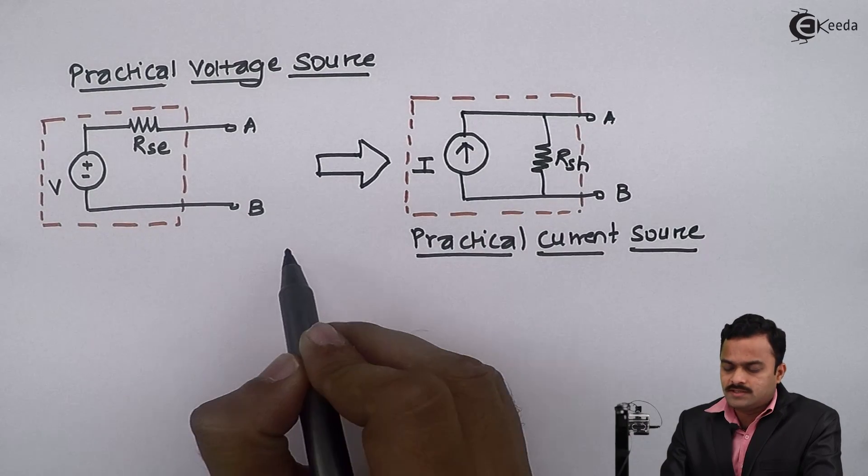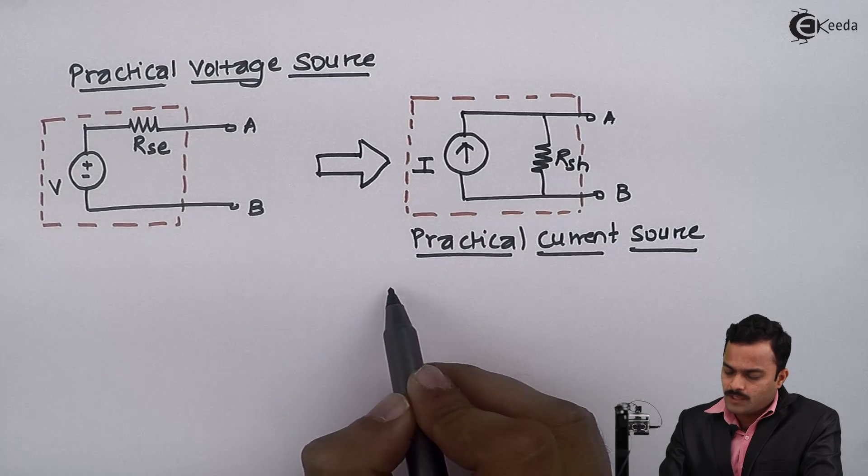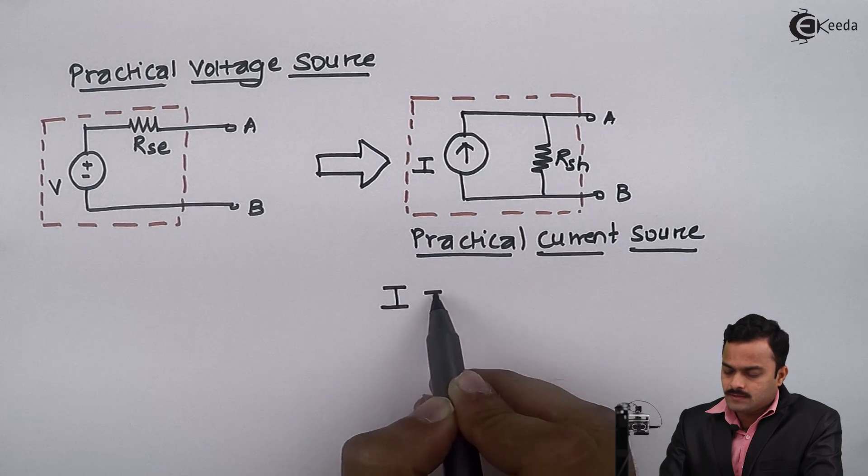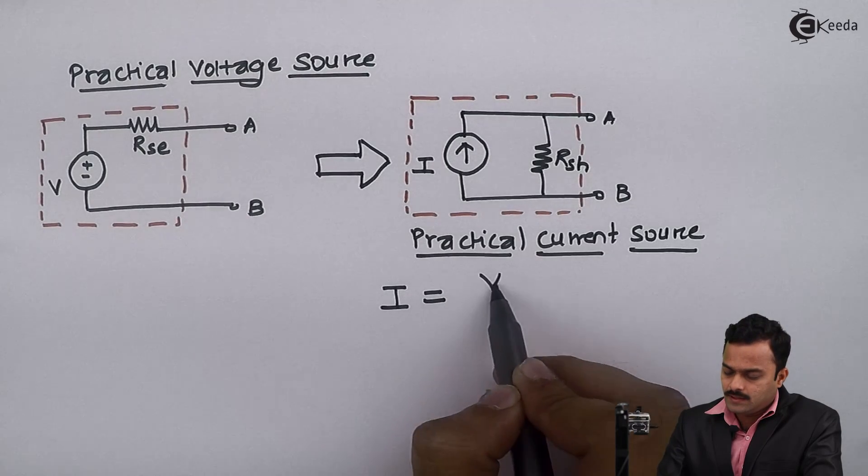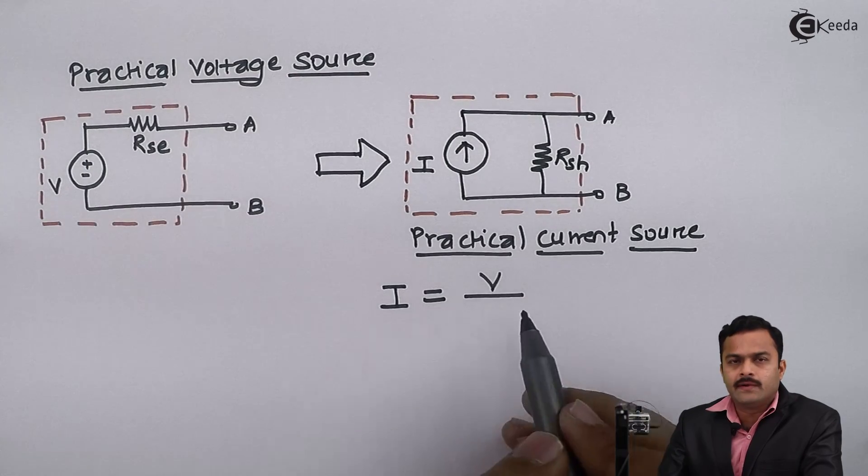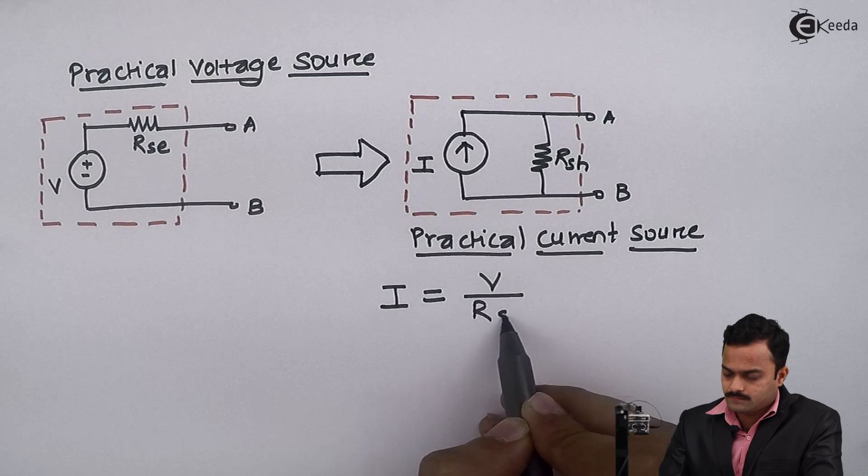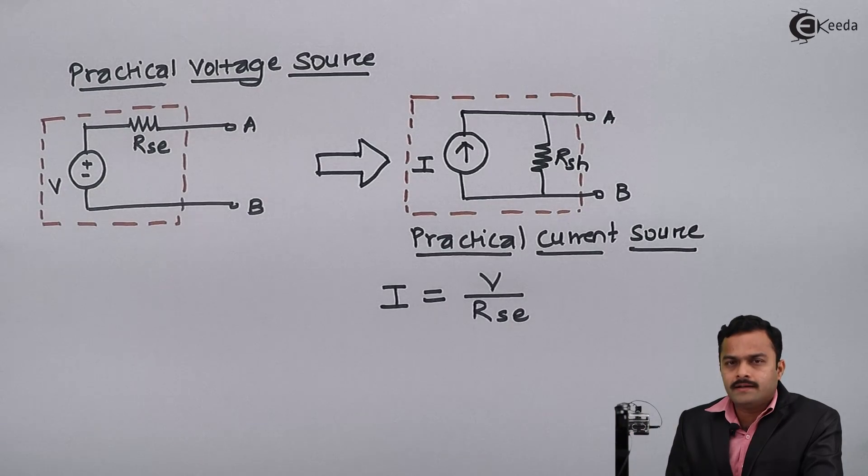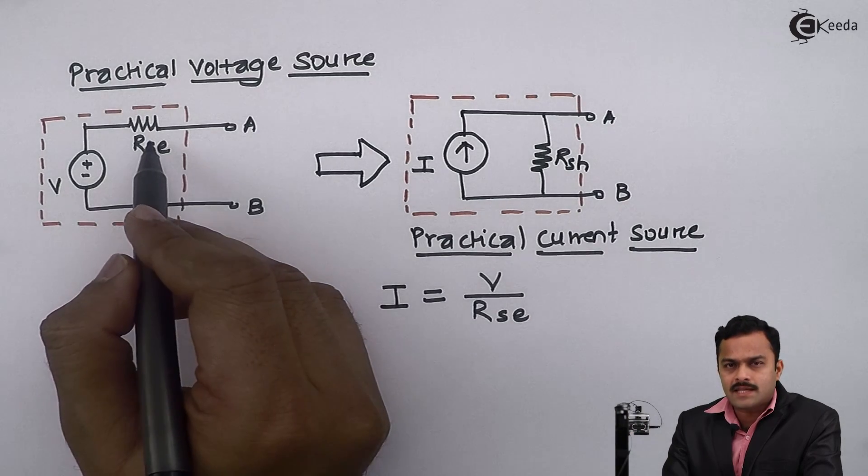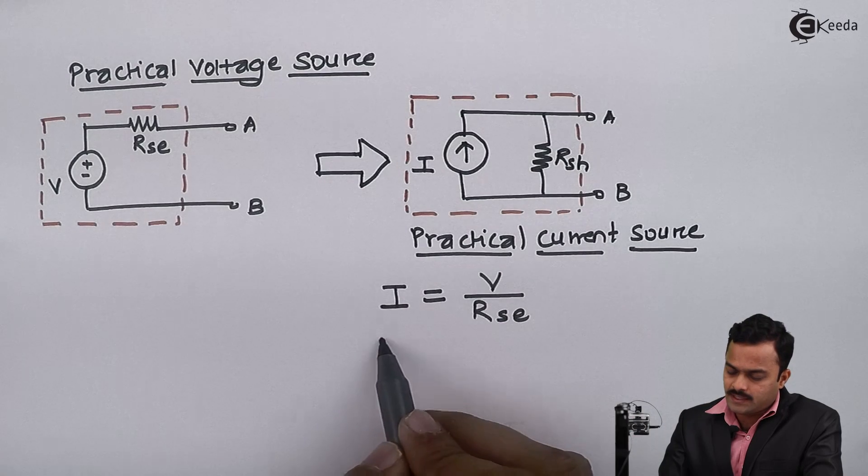Simply by Ohm's law I can say the current I is given as V divided by RSE. And whatever the value of RSE I am having that will be same as RSH.